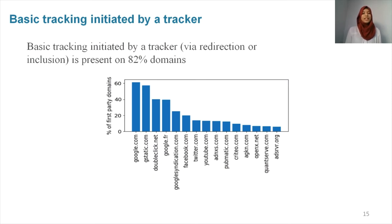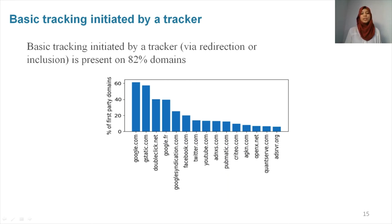We found this kind of behavior in 82% of the domains. In this figure, we present the top 15 domains performing basic tracking initiated by another tracker. In the x-axis, we have the domain names of the domains that are indirectly included. In the y-axis, we have the percentage of first-party domains. As you can see, google.com is the top domain being indirectly included — it is included in over 60% of the websites. So basically, google.com, by only relying on this kind of behavior, can recreate 60% of the user's profile without even having content directly on the website.